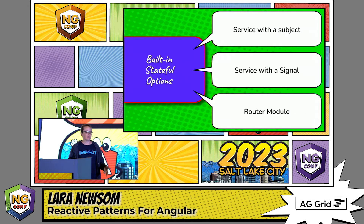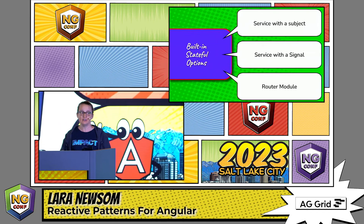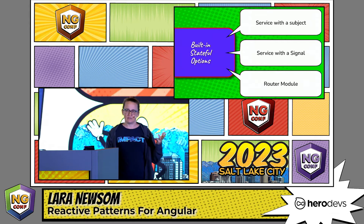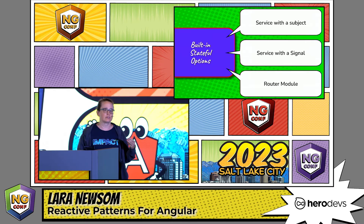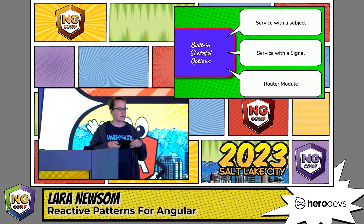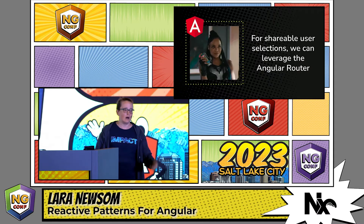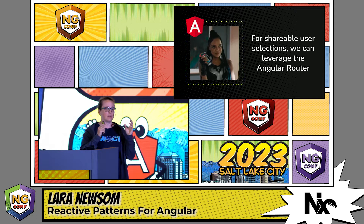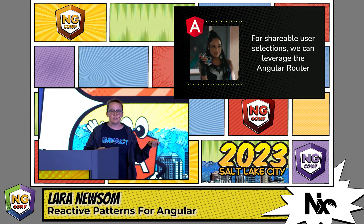We have some options for built-in stateful services in Angular: service with a subject, service with a signal, or the router module. You're not going to want to put all your state in the router module, but certain user selections could be stored in a browser URL. For shareable user selections — if you want somebody to copy a link and send it to their boss — you could leverage the Angular router for that.